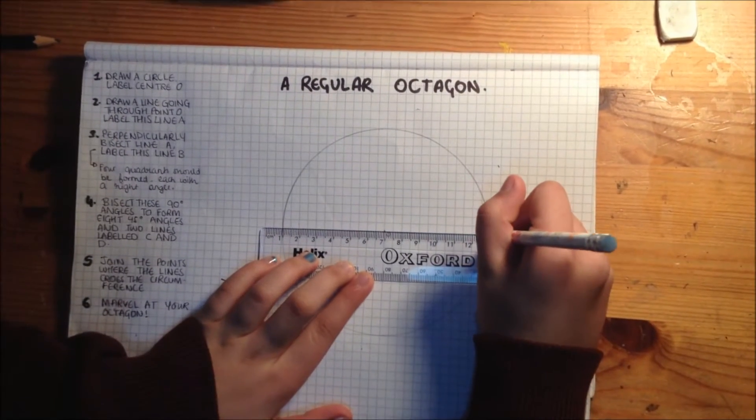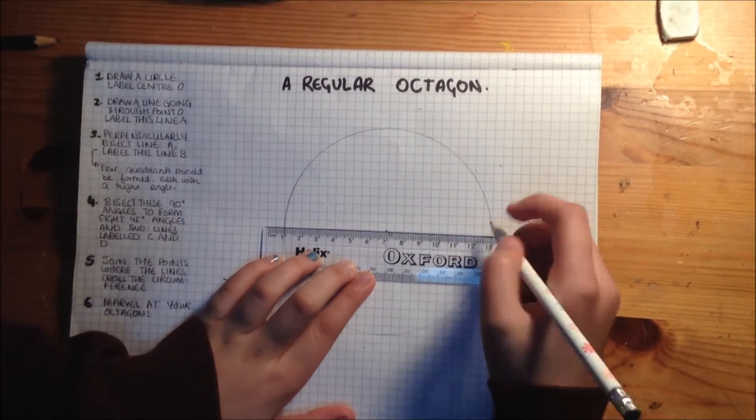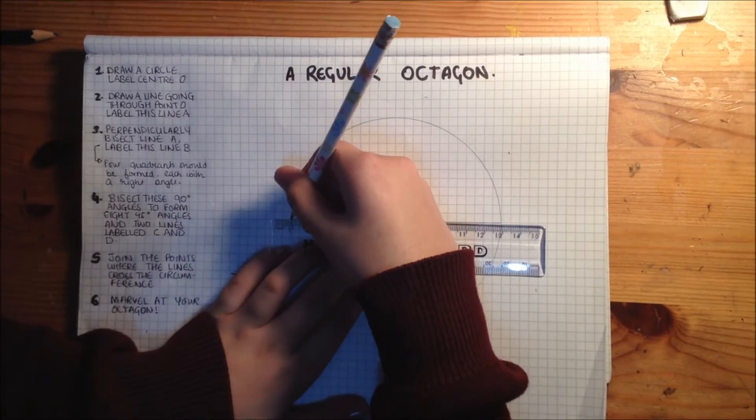Then, draw a straight line that goes through the centre point O of the circle, which technically becomes the diameter of the circle.